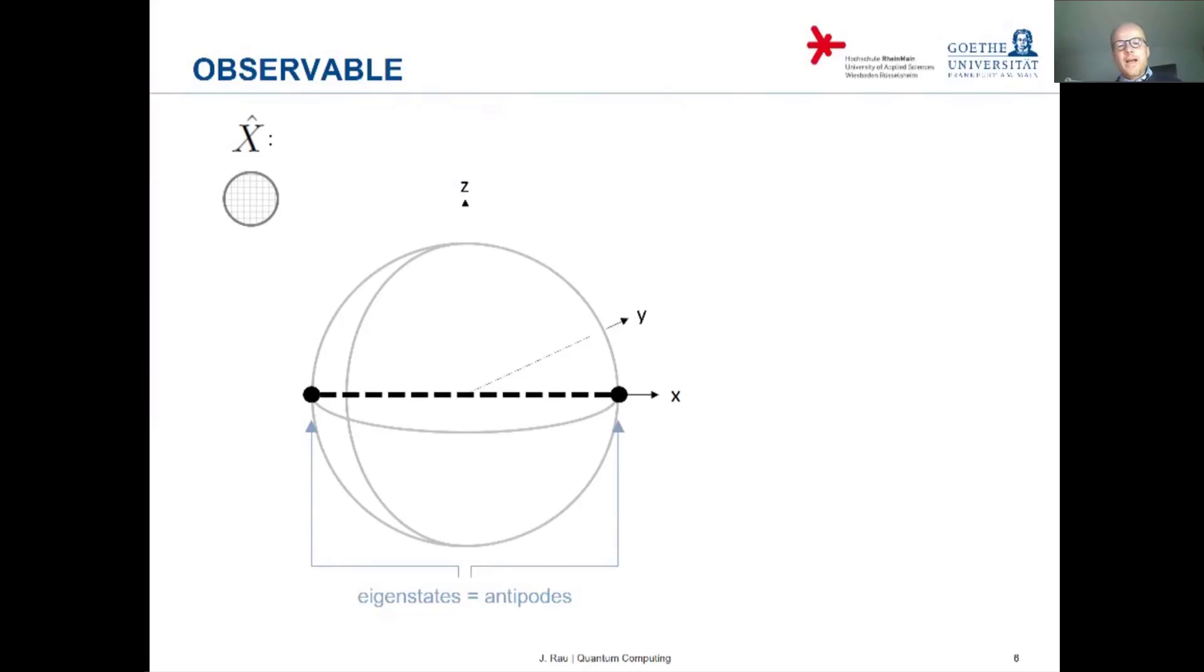So we can use that to visualize the observable on the Bloch sphere. First of all we say for the eigenstates of Pauli X they are the plus and the minus states. And there I mark them here with the black dots and they are on opposite sides of the Bloch sphere. And then we can associate with each of the eigenstates the corresponding eigenvalue.